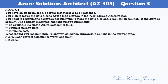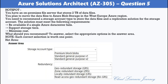Select the appropriate options in the answer area. For storage account type, the options are: premium block blobs, standard general purpose V1, standard general purpose V2. For redundancy, the options are: geo-redundant storage, zone-redundant storage, locally-redundant storage, and read-access geo-redundant storage. The correct answers are: standard general purpose V2, and zone-redundant storage. Standard general purpose V2 meets the requirements and minimizes costs; zone-redundant storage protects against data center failure while minimizing costs.